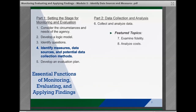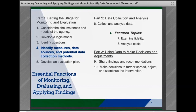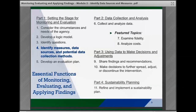Part two is collect and analyze data and it includes strategies to put the evaluation plan into place by collecting and analyzing the data outlined, and then two special featured topics that are a version of data collection and analysis: examining fidelity and analyzing costs. Part three outlines how to use the data collected to make decisions and adjustments with two functions on sharing findings and recommendations and then making decisions to spread, adjust, or discontinue. Part four is on sustainability planning and how teams should refine and implement a plan to sustain interventions when this is the decision of the team and stakeholder groups.